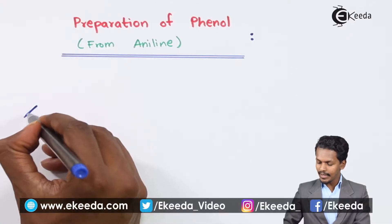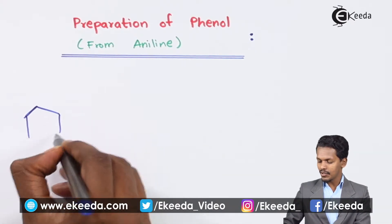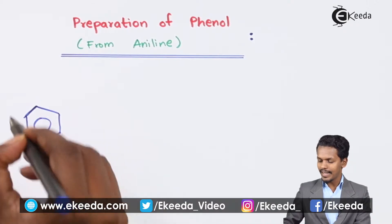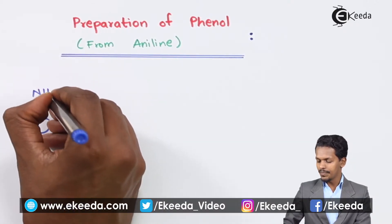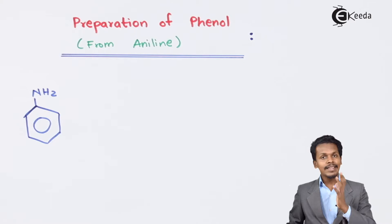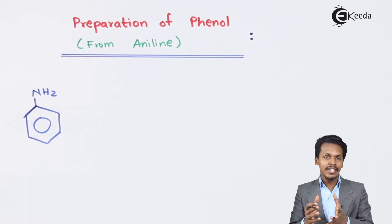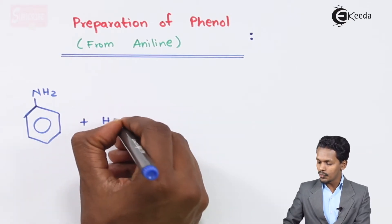Suppose we have aniline, and we can write the structure of aniline as benzene attached with NH2. Now this NH2 or amino group will be responsible in the diazotization process, but for that we have to use a certain reagent and that is HNO2. This HNO2 is nitrous acid that should be reacted with HCl.